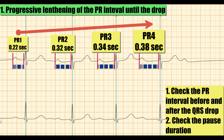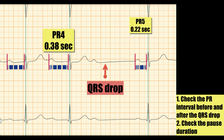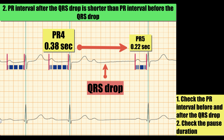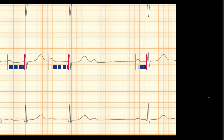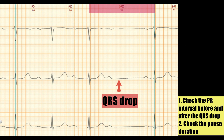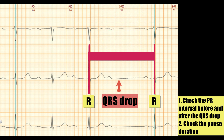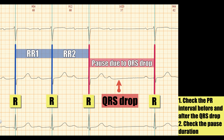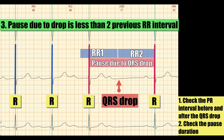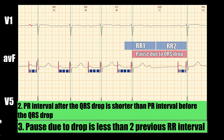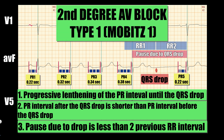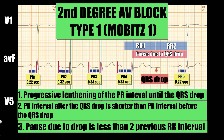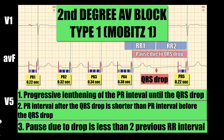PR intervals progressively increase until the QRS drop. The PR interval after the QRS drop equals 0.22 second — shorter than the PR interval before the drop. The pause duration due to the drop is also less than two previous RR intervals. Progressive PR interval prolongation until the QRS drop, together with a shorter PR interval after the drop and a pause less than two previous RR intervals — all of this indicates 2nd degree AV block type 1, or Mobitz 1.